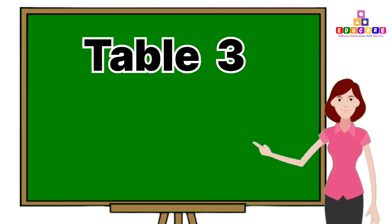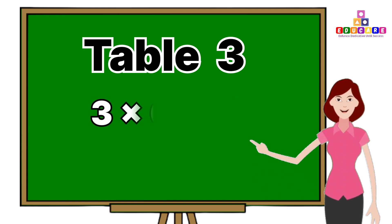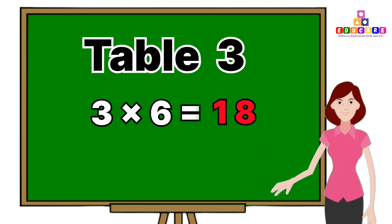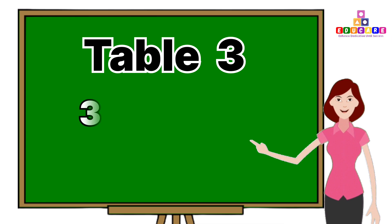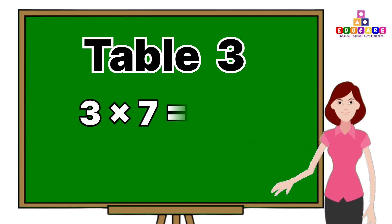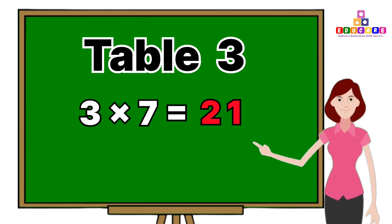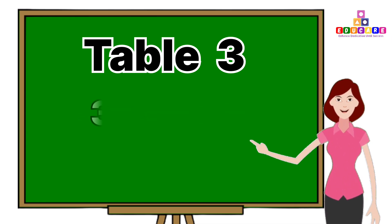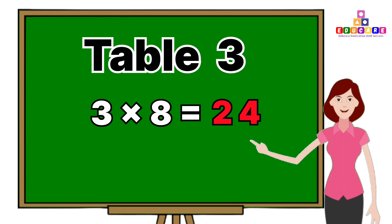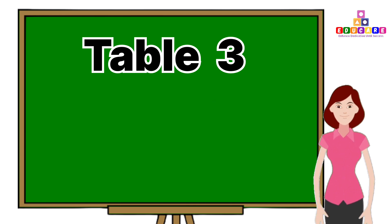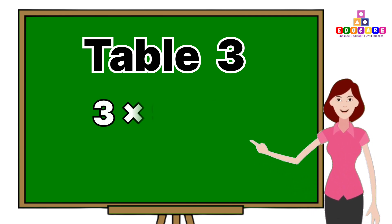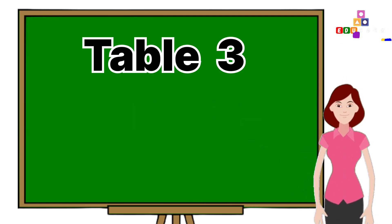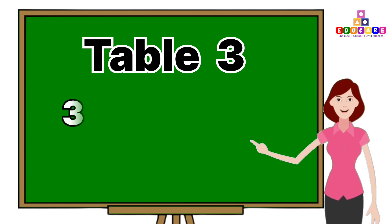3 sixes are 18, 3 sevens are 21, 3 eights are 24, 3 nines are 27, 3 tens are 30.